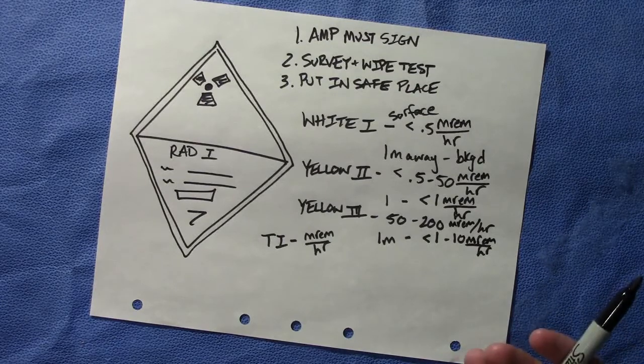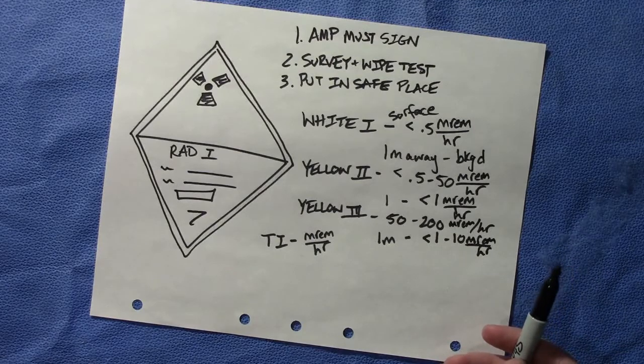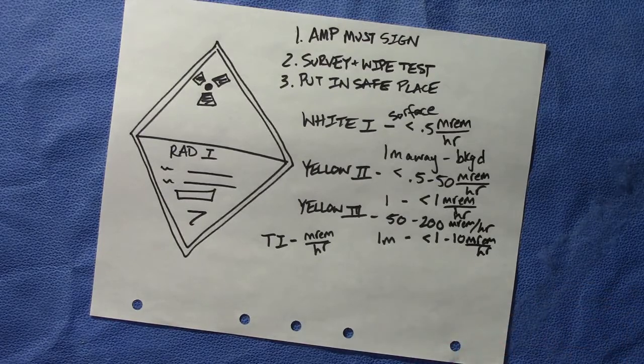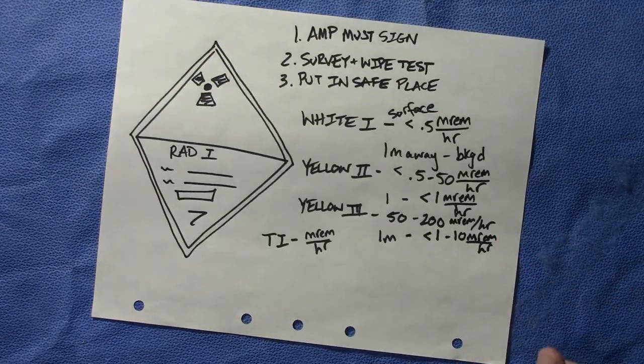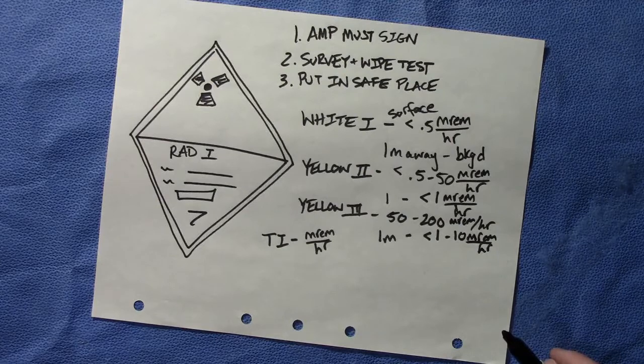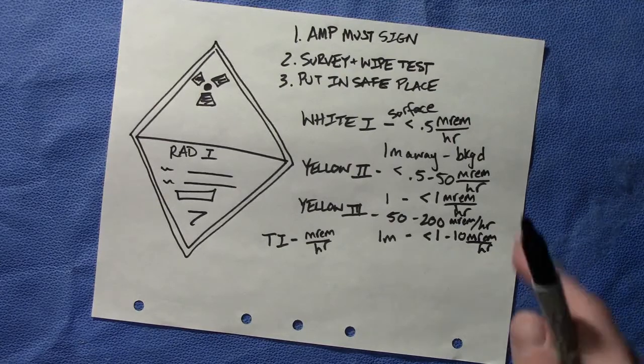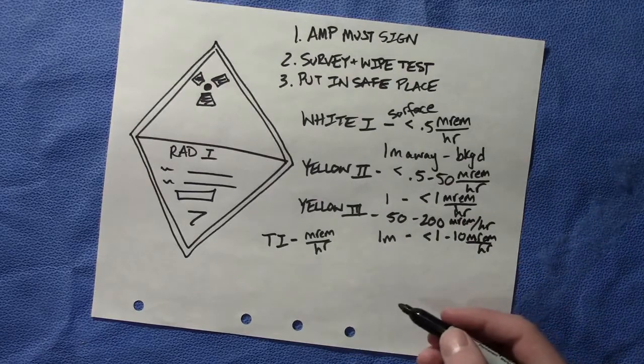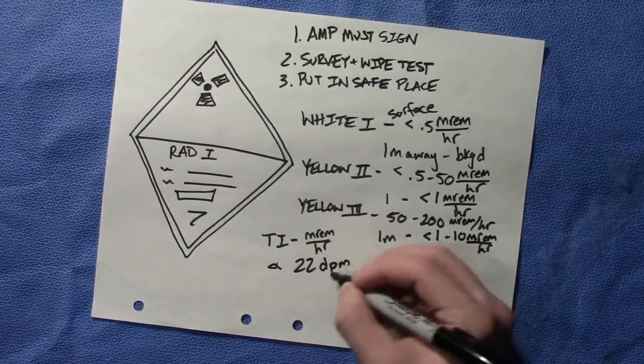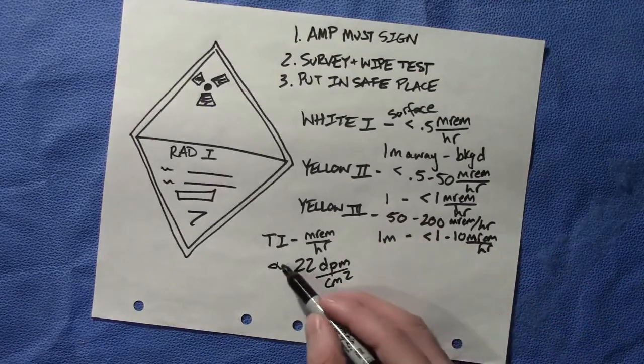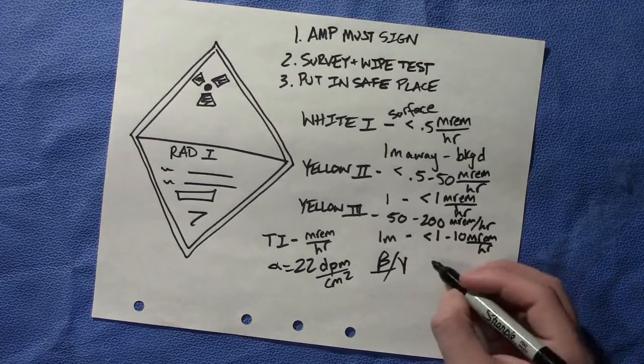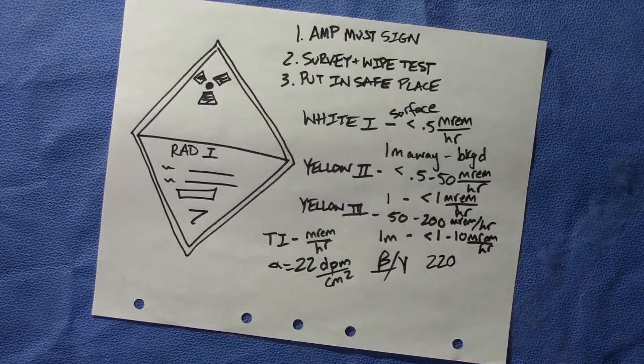For a leakage test, how would you do that for a package that you receive, and what values would you anticipate for an alpha or beta emitter? To do a leakage test, simply do a wipe test. You wipe the surface of the material and what's being held in it. For alphas, you want 22 disintegrations per minute per centimeter squared - that is the max number that you can have. If you have beta emitters or gammas, we want 220 DPM per centimeter squared.